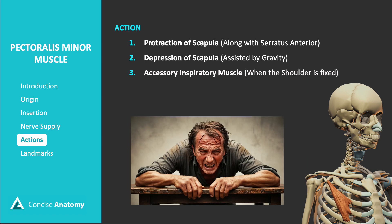When the shoulder is stabilized, such as when holding onto a table, the pectoralis minor can act from its insertion to its origin. With the scapula fixed in place, it elevates the third, fourth, and fifth ribs, contributing to inspiration as an accessory muscle. This elevation aids breathing by expanding the chest cavity, particularly during labored or deep breathing.